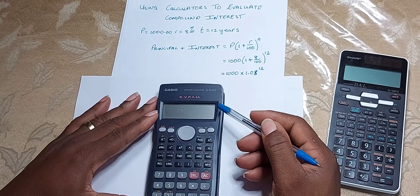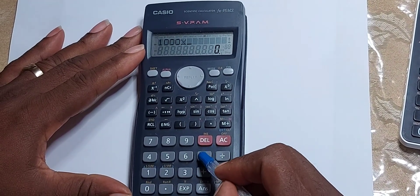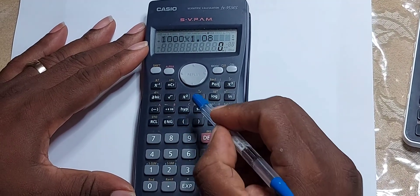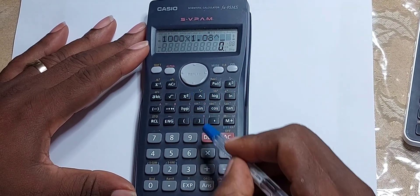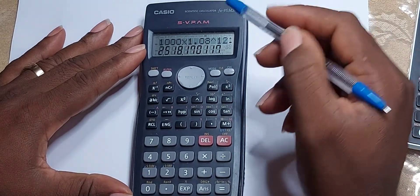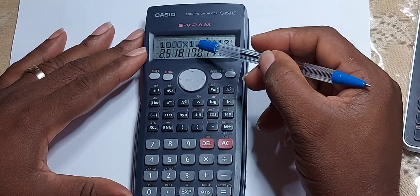Let us evaluate it first using the Casio calculator. We input 1000 multiplied by 1.08 to the power of 12, and this will give me 2518.17.